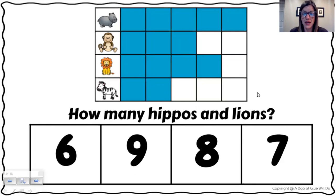Now it gets a little bit tricky. It says, how many hippos and lions? That means we're going to put those two numbers together. We're going to add them.